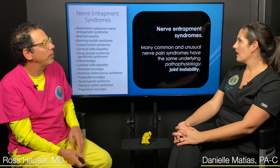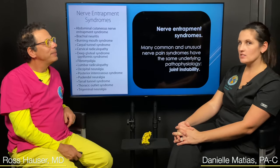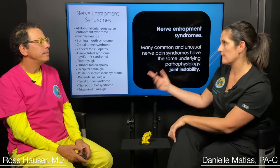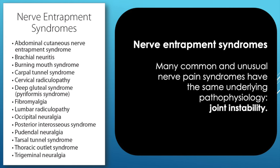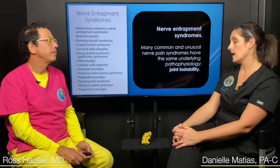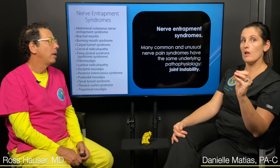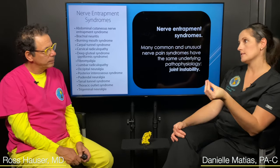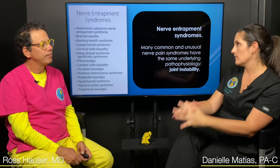We actually see quite a few nerve entrapment syndromes in our office: burning mouth syndrome, brachial neuritis, carpal tunnel — very common — radiculopathy, sciatica, occipital neuralgia, pudendal neuralgia — also very common — and trigeminal neuralgia as well. Our goal and objective is to follow the neurology and figure out exactly what is causing that. And if there is a joint instability component, can we resolve it with prolotherapy?